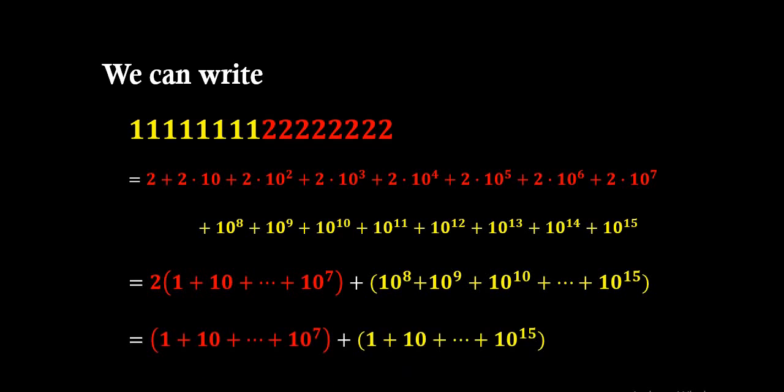What I mean is: the first term will become (1 plus 10 plus 10² up to 10⁷), and the other identical group (1 plus 10 plus ... up to 10⁷) gets added with 10⁸ plus 10⁹ up to 10¹⁵, so that it becomes (1 plus 10 plus ... up to 10¹⁵).